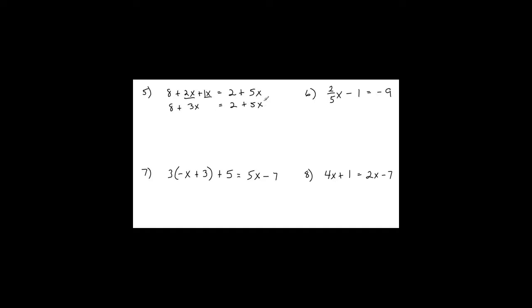Check for variables on both sides: I have 3x on the left and 5x on the right. Our pattern is to bring variables from the right to the left, so opposite of 5x is negative 5x. Those cancel. I have 3 and negative 5 — more negatives, so I subtract, giving negative 2x. On the right I have positive 2. Now a two-step equation: opposite of 8 is negative 8 on both sides, leaving negative 2x equals negative 6. Divide by negative 2, and x equals positive 3.